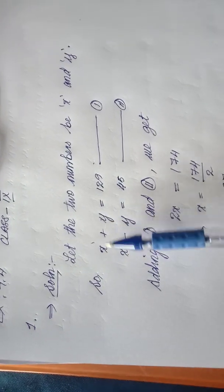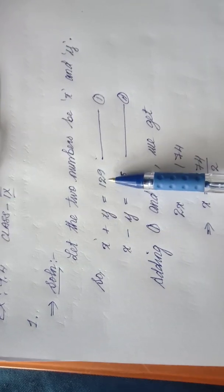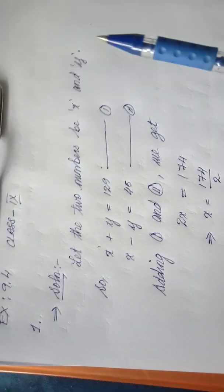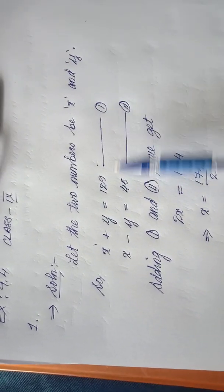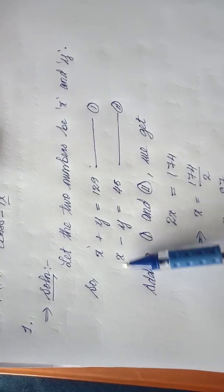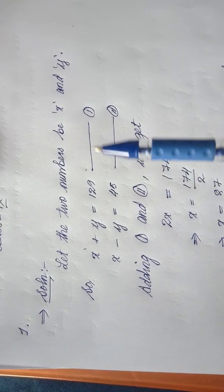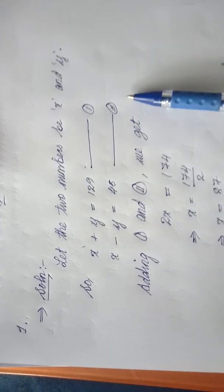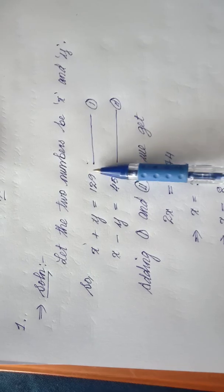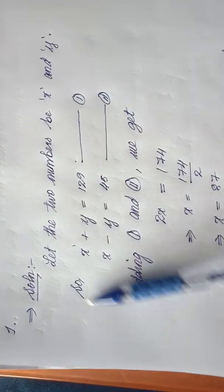The sum of the numbers is 129, that's equation one. The difference of the numbers is 45, x minus y equals 45, that's equation two.